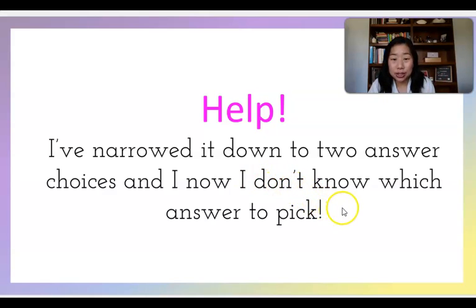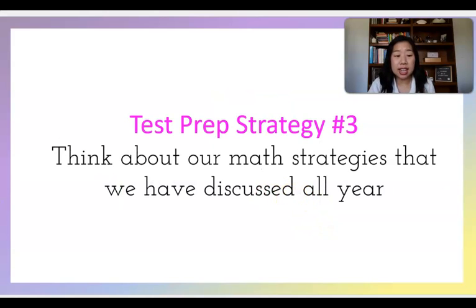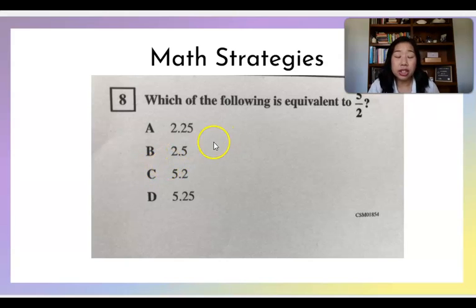Help. I've narrowed it down to two answer choices and now I don't know what to do. How many times have we been in that situation ourselves? And now we see our own students in the situation as well. Which leads me to test prep strategy three, which is to really think about all the strategies that we've learned this year. So if we are looking at a question like this, which of the following is equivalent to five over two? 2.25, 2.5, 5.2, 5.25.